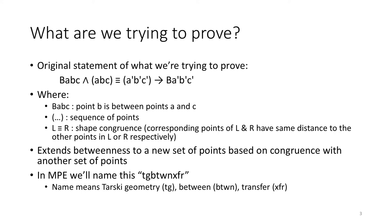The list in parentheses is a sequence of points and the triple bar means shape congruence. This statement extends betweenness to a new set of points based on congruence with another set of points. In MPE, we will name this theorem TGBTWN XFR, which means Tarski geometry between transfer.